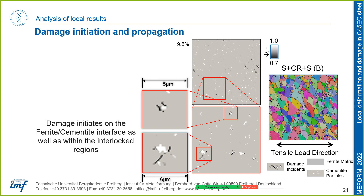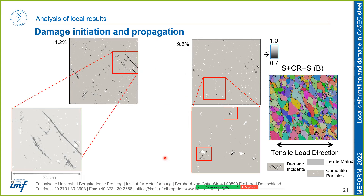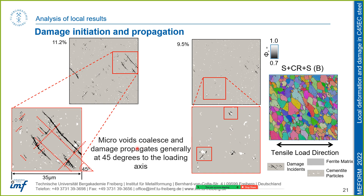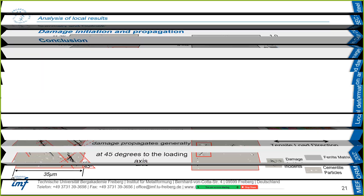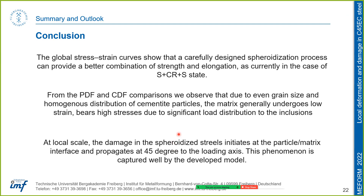Regarding damage behavior, at 9.5% true strain, damage initiates at the ferrite–cementite interfaces as well as within interlocked regions. At relatively higher strains, these initiations coalesce and micro-cracks start to initiate and propagate generally at 45 degrees to the loading axis. Numerically, these simulation models capture the global stress-strain behavior in the medium strain regime with quite good accuracy, and post-processing provides good information about how stresses and strains are distributed. Damage in spheroidized steels initiates at particle-matrix interfaces and propagates at 45 degrees to the loading axis.